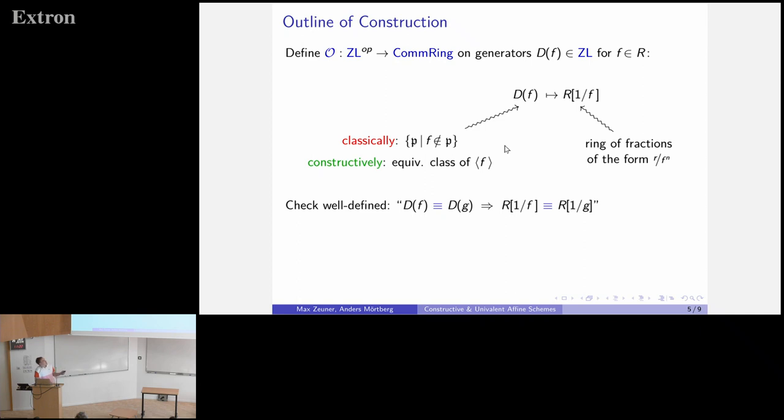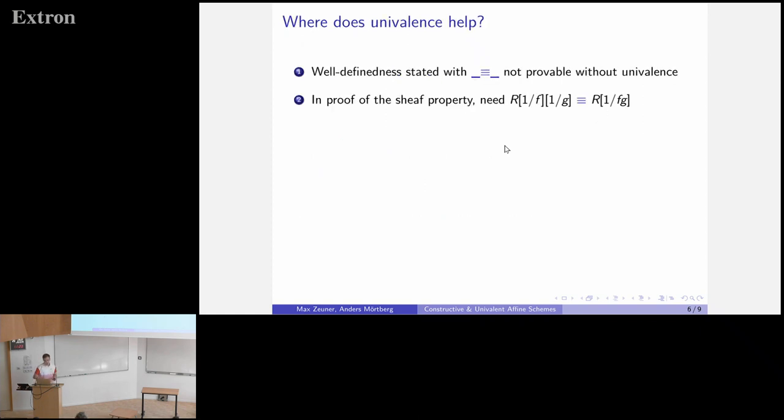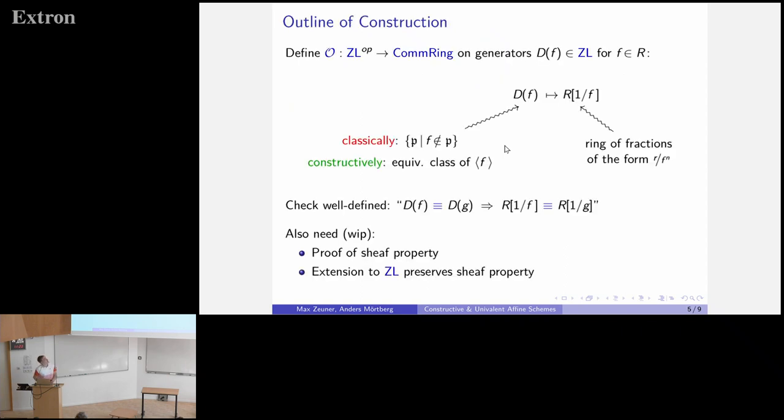The problem is this can be true even if f and g are different elements in your ring. It can happen that you have two different f and g, but their ideals land in the same equivalence class. Somehow we still have to produce a path here. Then there's more, which is currently work in progress as far as formalization goes. We have to prove that this is a sheaf and show that we can extend this to the whole lattice and still get the sheaf property.